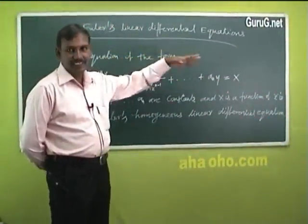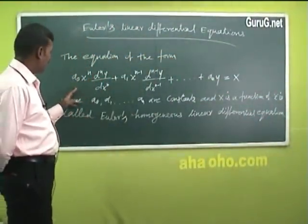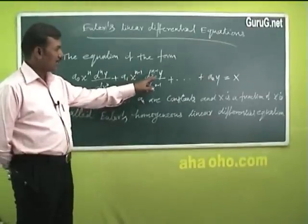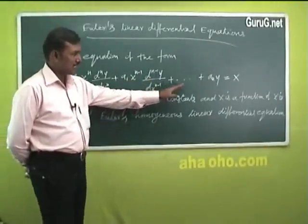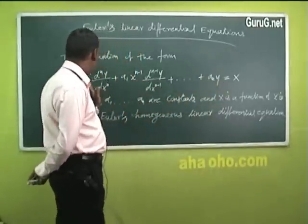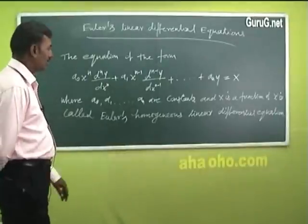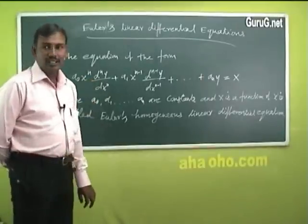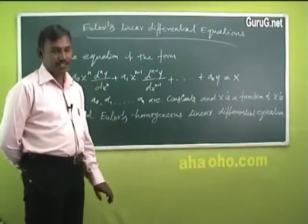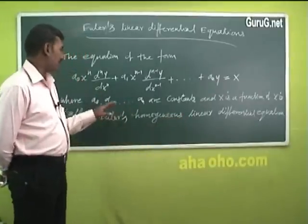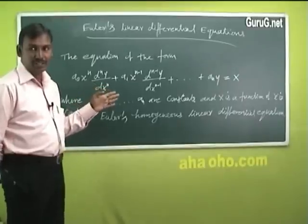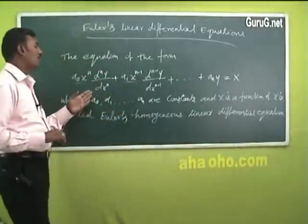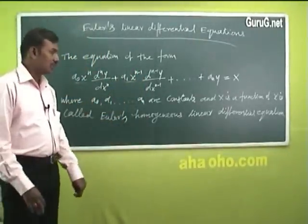Euler's Homogeneous Linear Differential Equation is the next type. The equation is of the form a₀xⁿ (dⁿy/dxⁿ) + a₁xⁿ⁻¹ (dⁿ⁻¹y/dxⁿ⁻¹) + ... + aₙy = X, where a₀, a₁, ..., aₙ are constants and X is a function of x. This type of equation is called Euler's linear differential equation or homogeneous linear differential equation.